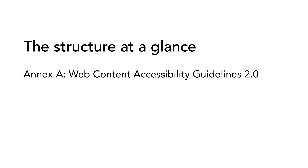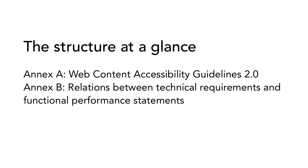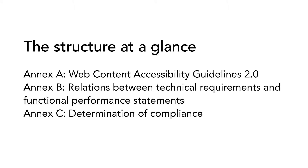The standard also has three annexes. Annex A contains the Web Content Accessibility Guidelines 2.0. Annex B gives you information on the relationship between the technical requirements and the functional performance statements, and how they work together. Annex C contains information on how to test, which is also called determination of compliance.